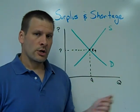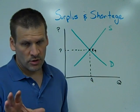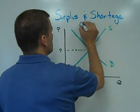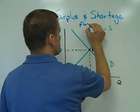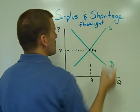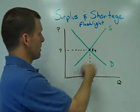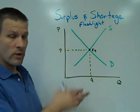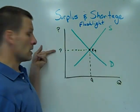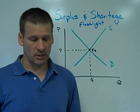We're starting off analyzing our market here. We're going to start with the flashlight market, where we have demand for flashlights, we have a supply of flashlights, we have an initial equilibrium here of EQ, an initial price of P, and an initial quantity of Q.